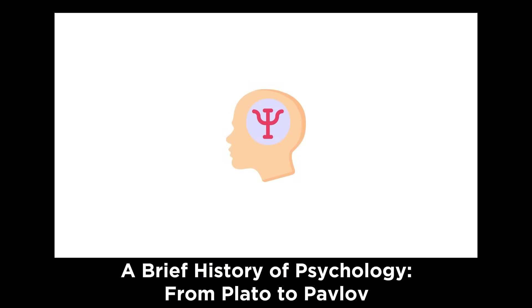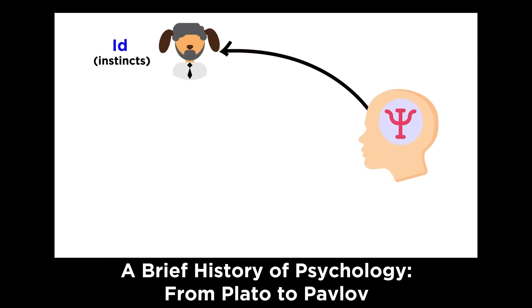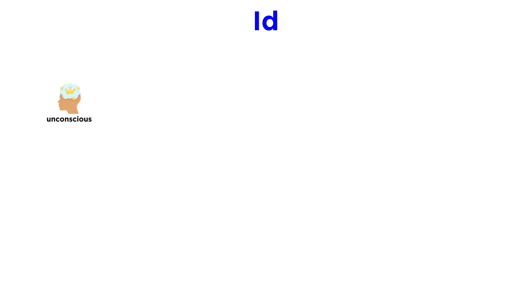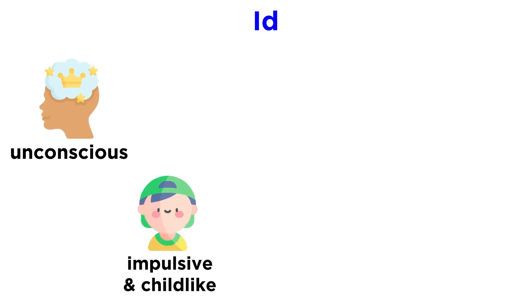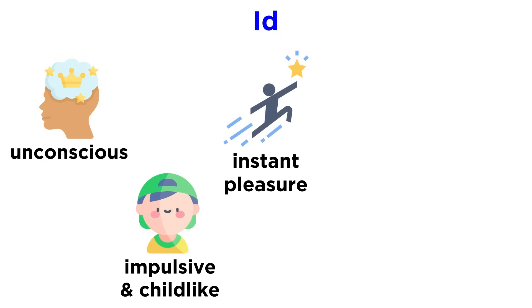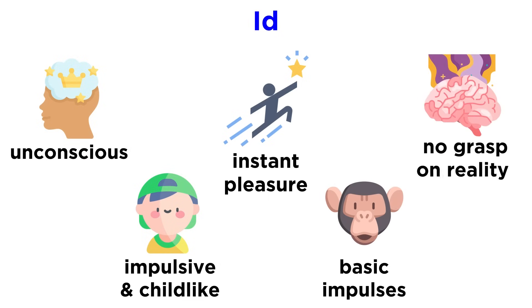Freud believed the psyche was made of three parts: the id, ego, and superego. The id is the completely unconscious part of your psyche. It is impulsive and childlike, constantly seeking immediate pleasure and gratification. According to Freud, the id is the source of our basic impulses. It has no grasp on reality or that there are consequences for actions. The id just wants.